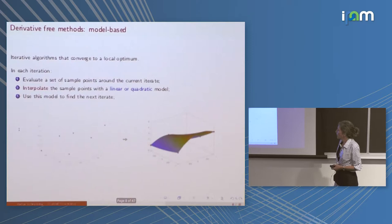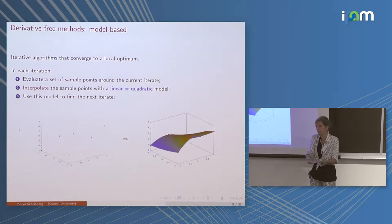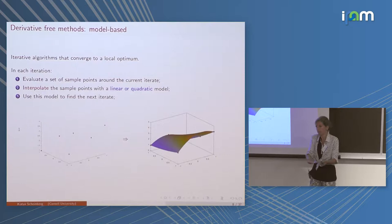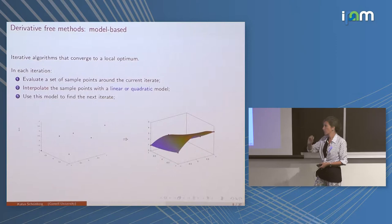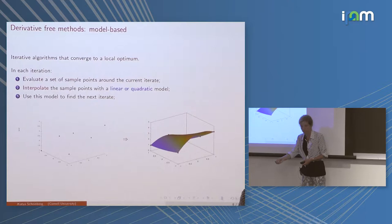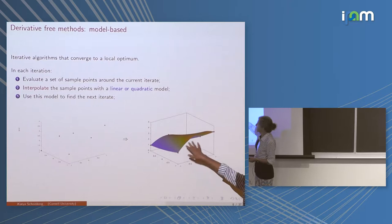The second class are model-based methods: I fit a model to my data, then optimize that model to decide what to do next. This is very relevant to active learning and generative models — it is essentially machine learning, except my data is generated by my algorithm. My goal is not to approximate the function everywhere; my goal is to find the minimum, which is much more specific and makes my life easier.